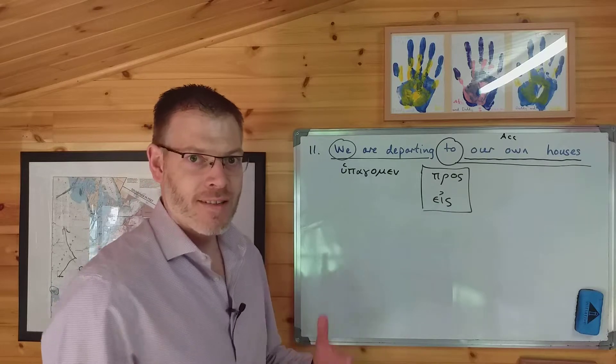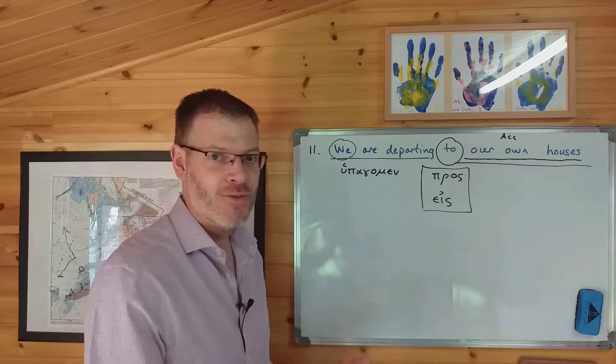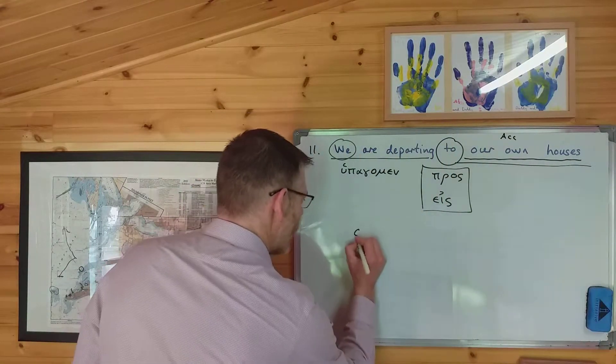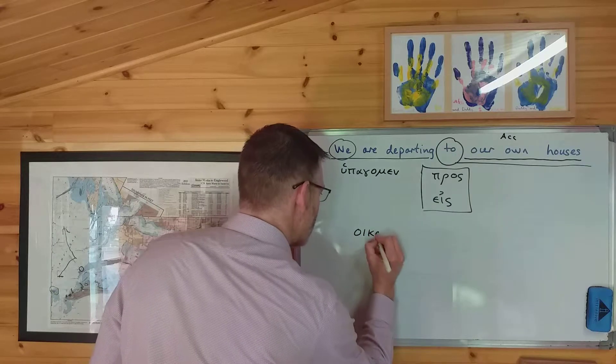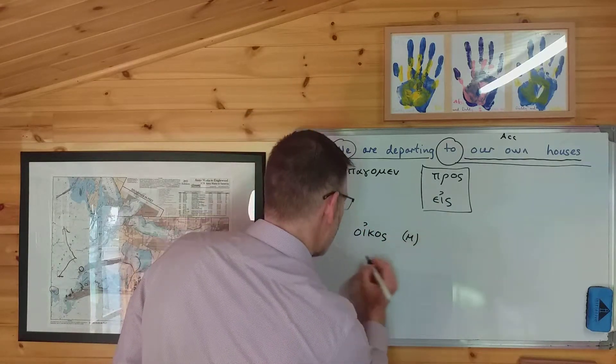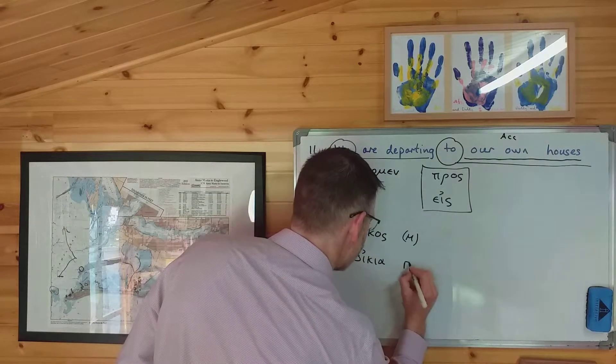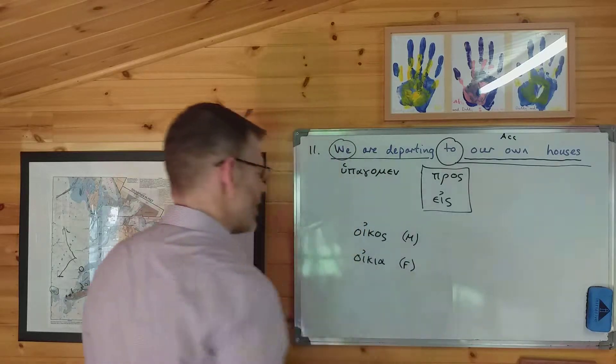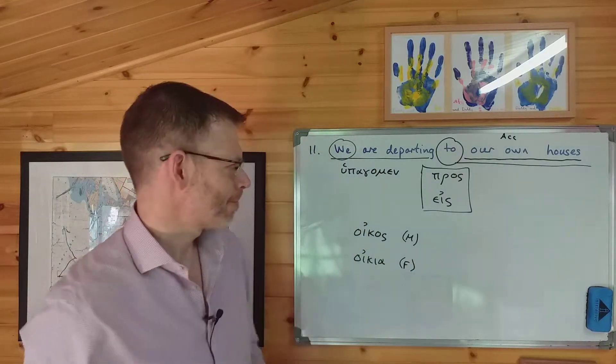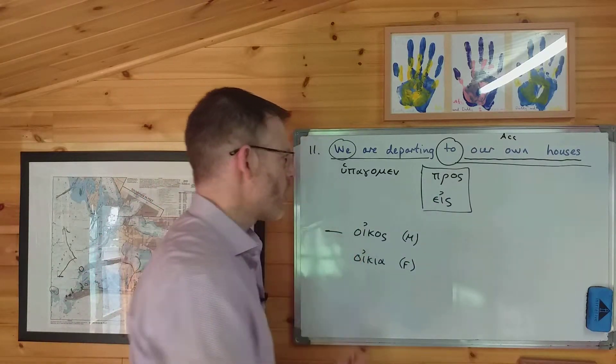So this little baby, our own houses, wants to be in the accusative. That just raises the next slight complication, because what's the Greek word for a house? Well, there are two Greek words that you've learned so far for a house, and you have either oikos, which is a masculine noun, or oikia, which is a feminine noun. And for the sake of completion, we probably ought to do them both. So we'll do these one at a time over here.